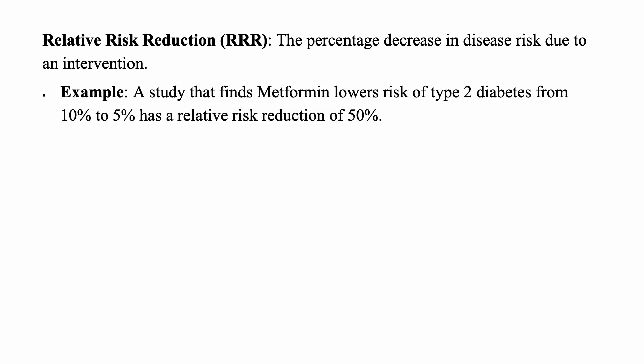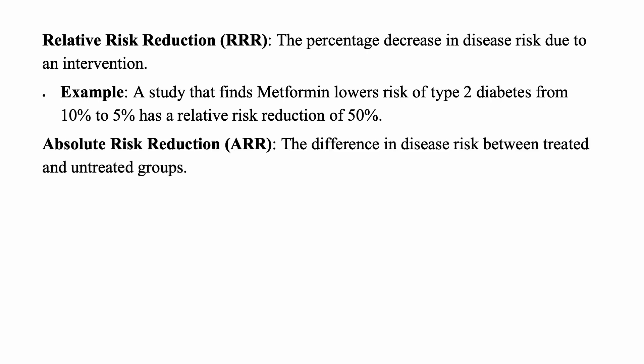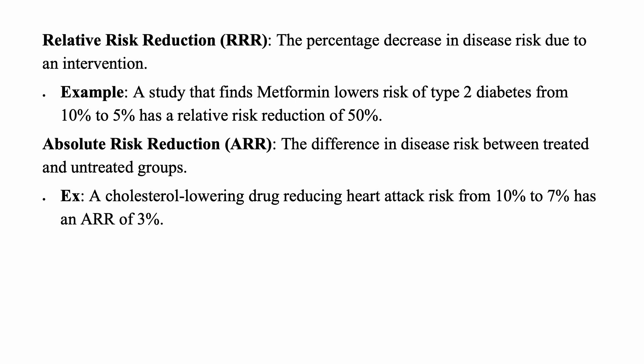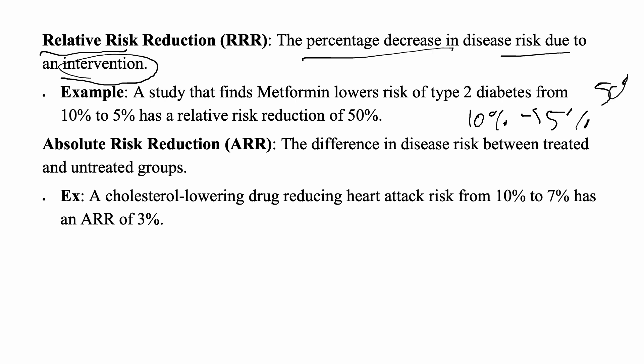An example of relative risk reduction would be a study that finds metformin lowers the risk of type 2 diabetes from 10% to 5%, which would have a relative risk reduction of 50%. The relative reduction from 10% to 5% is 50%.